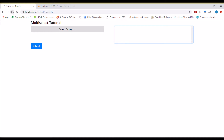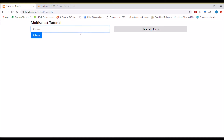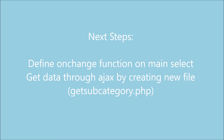Let's check this in the browser. After refreshing, you can see the sub-select is there with the multi-select option. The next step is to define an onChange function on my main select — that is the category dropdown.